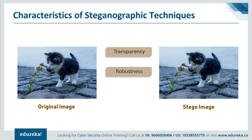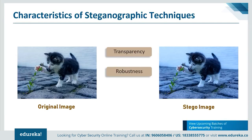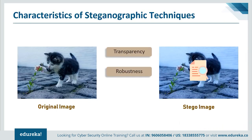The next feature is robustness — the ability of the hidden message to remain undamaged even if the stego media undergoes transformation like cropping, scaling, blurring, or linear and nonlinear filtering. We must ensure the technique does not affect our secret message. The last property is tamper resistance — if an attacker successfully destroys the steganography technique, the tamper-resistant property makes it difficult for the attacker to alter or damage the original data. You can think of it as the last step a sender can take to protect their data.